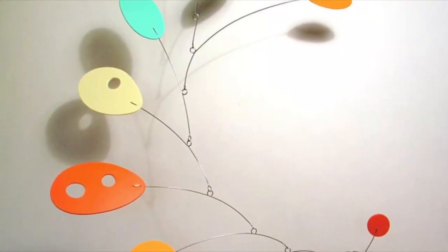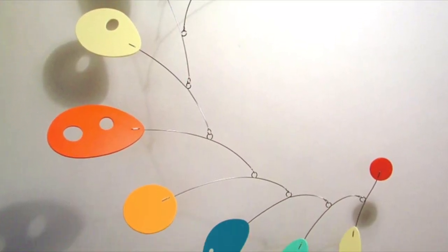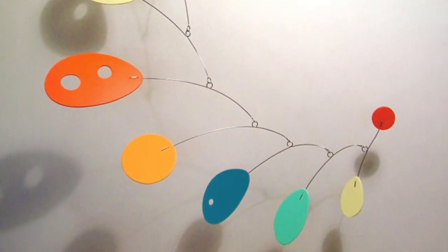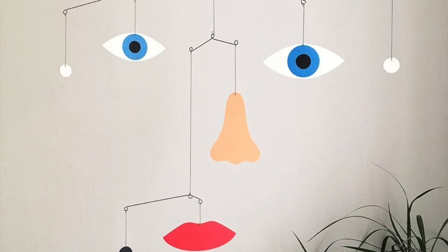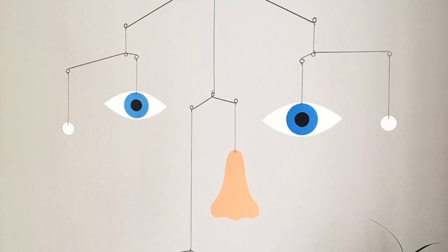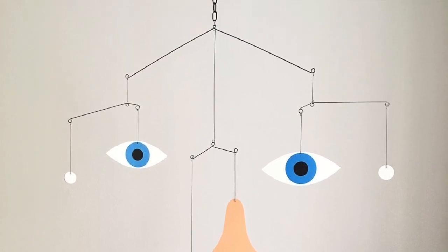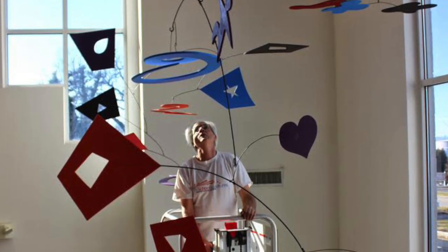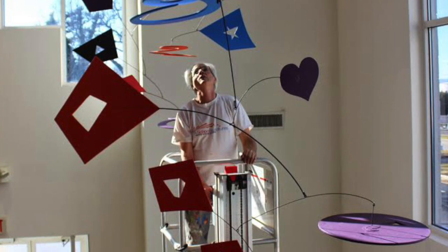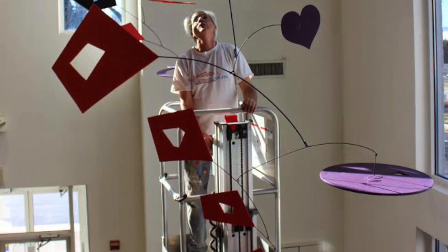The Tate Museum says a mobile is a type of sculpture that is formed of delicate components which are suspended in the air and move in response to air currents or motor power.